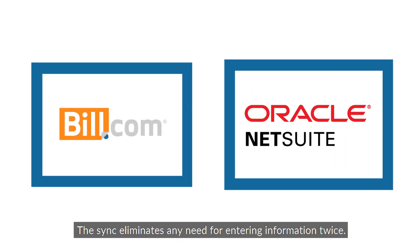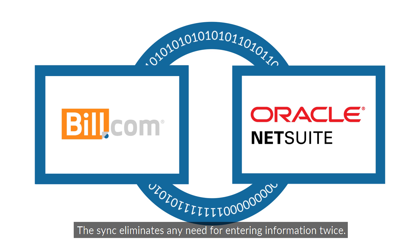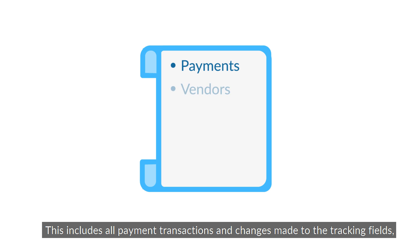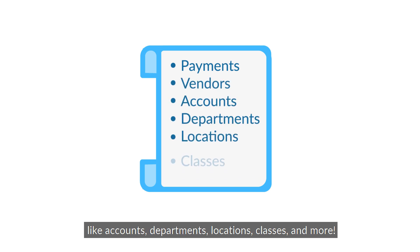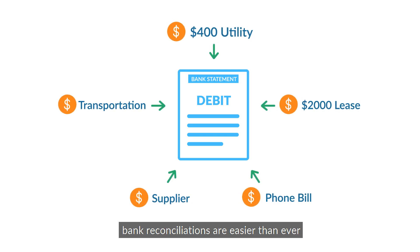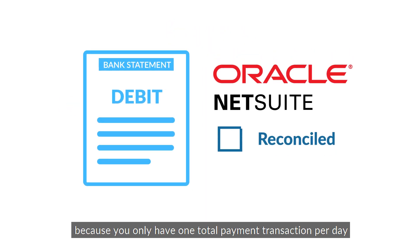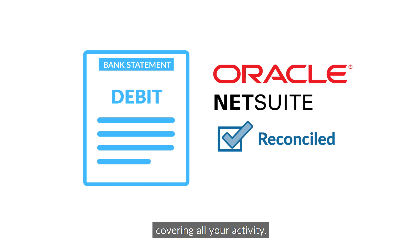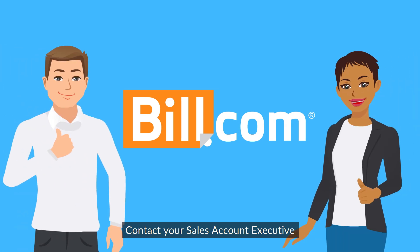The sync eliminates any need for entering information twice. This includes all payment transactions and changes made to tracking fields like accounts, departments, locations, classes, and more. With Bill.com and NetSuite sync, bank reconciliations are easier than ever because you only have one total payment transaction per day covering all your activity.